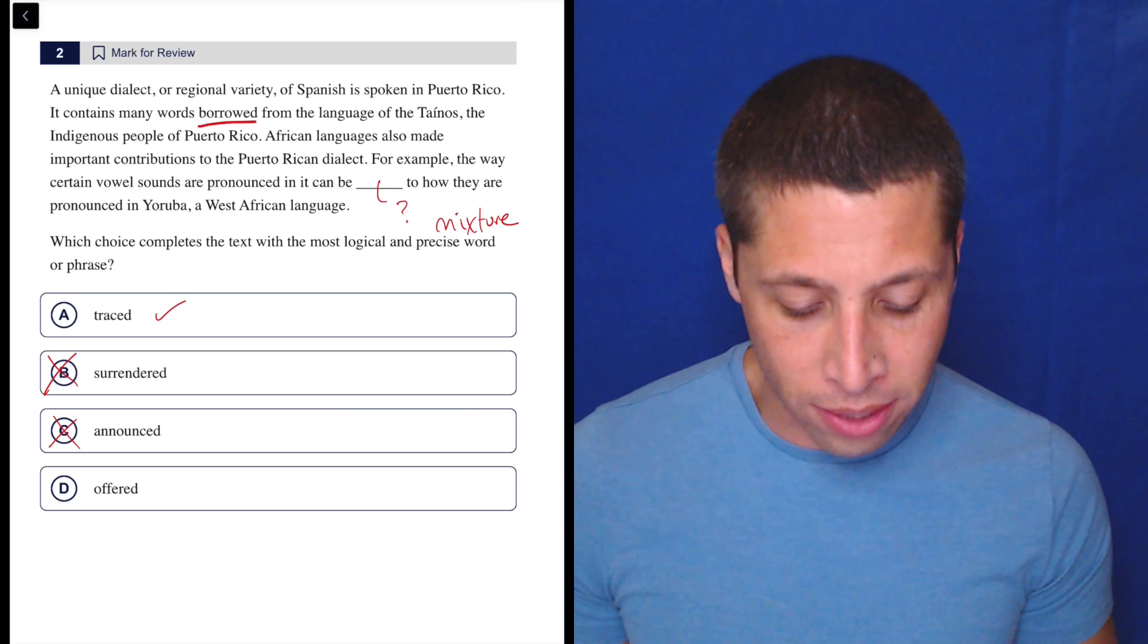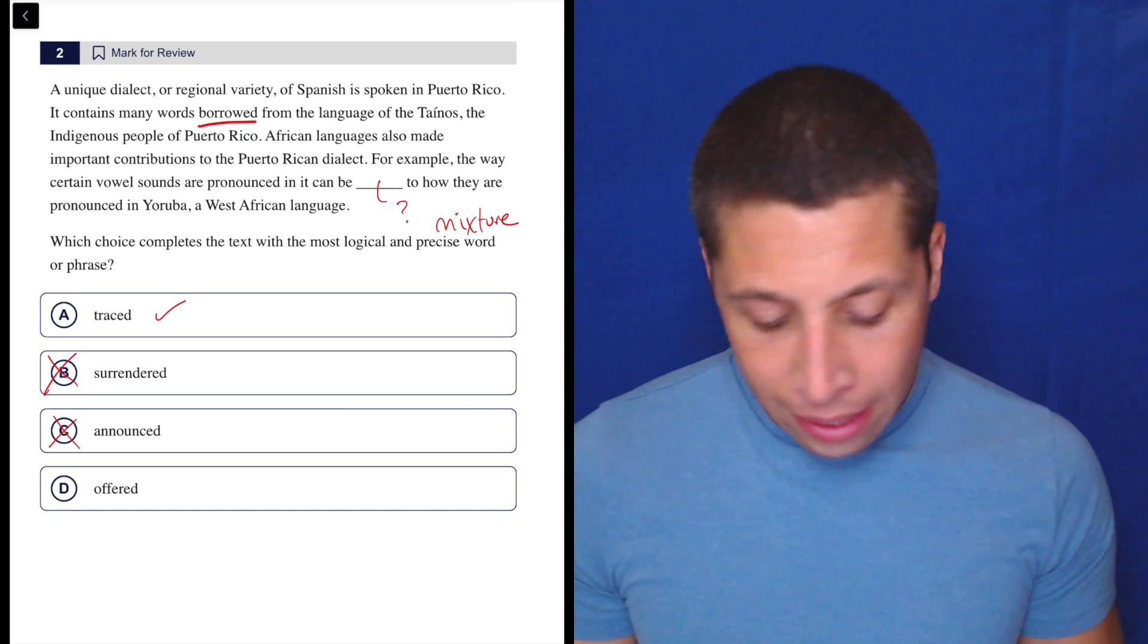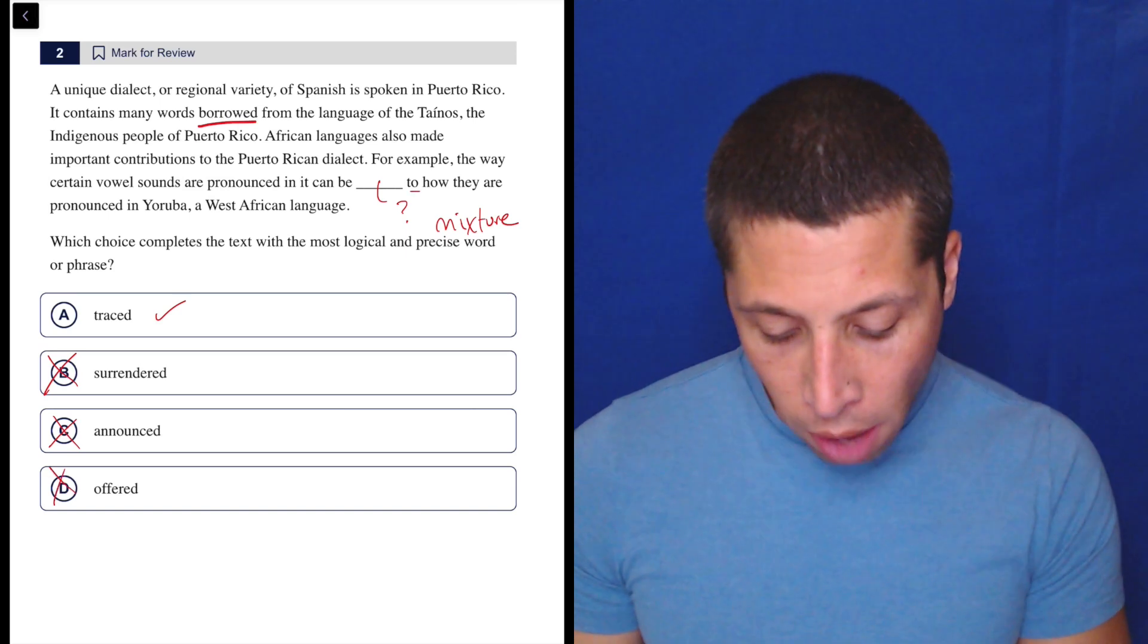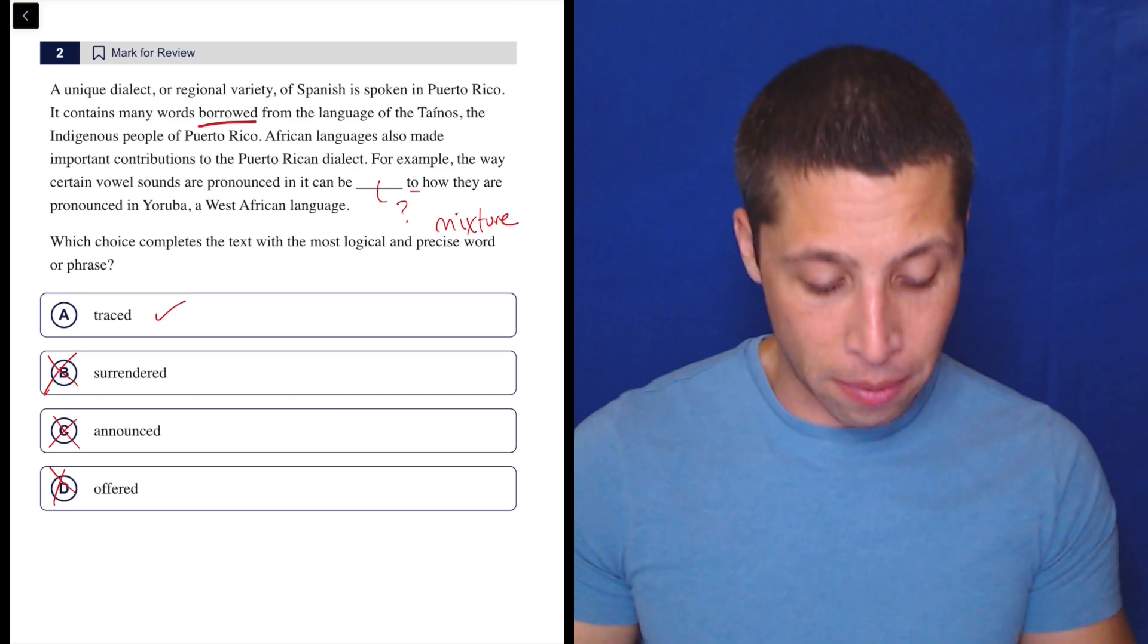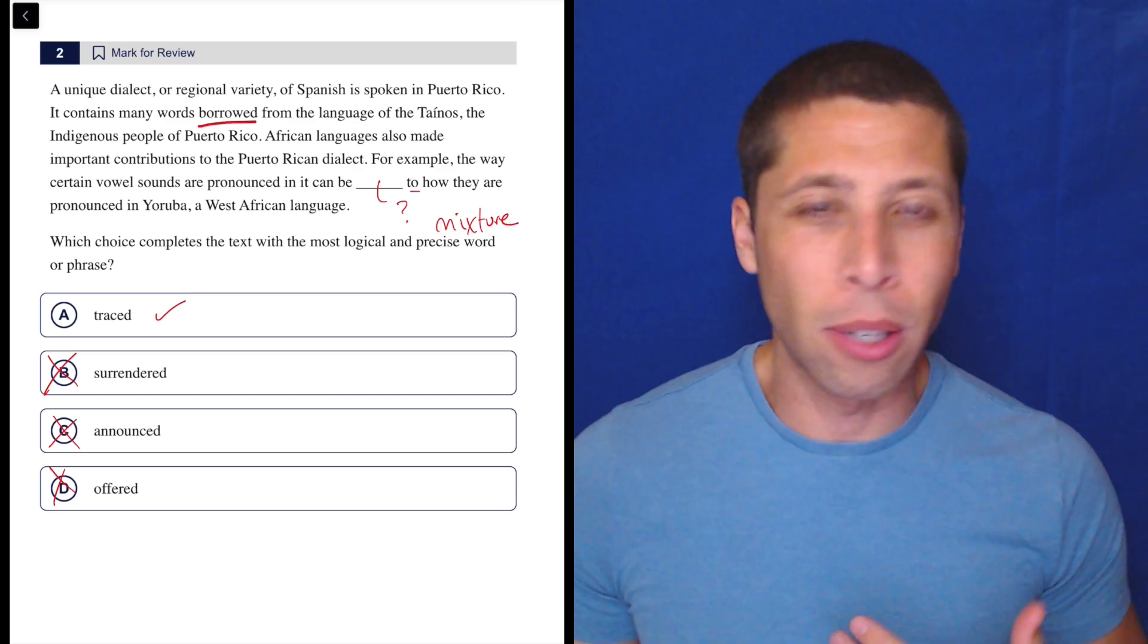And then D, the way certain vowel sounds are pronounced in it can be offered to how they are pronounced in Yoruba. A lot of it has to do with this word to. Offered to means like you kind of give someone something, but who are we giving anything to? We're talking about a language. So it doesn't make any sense.